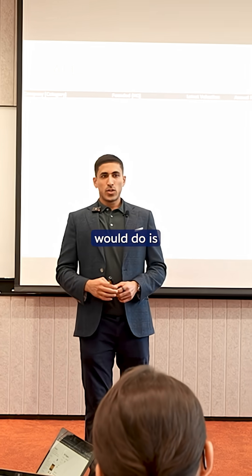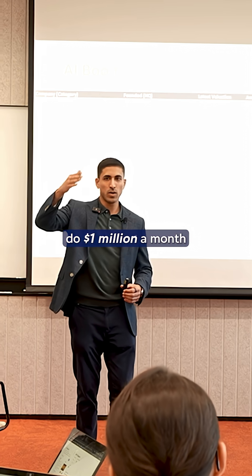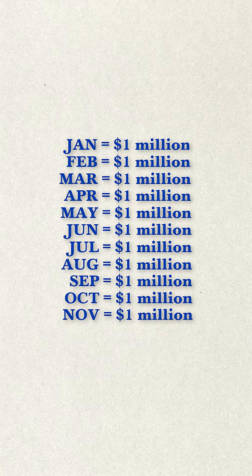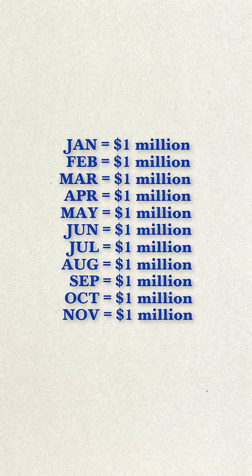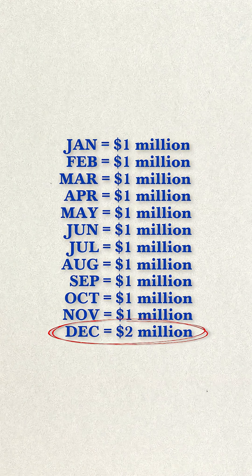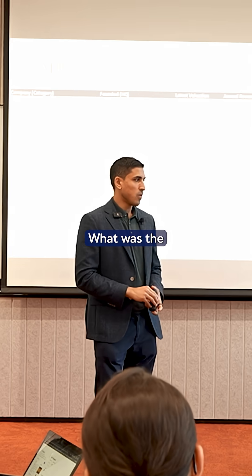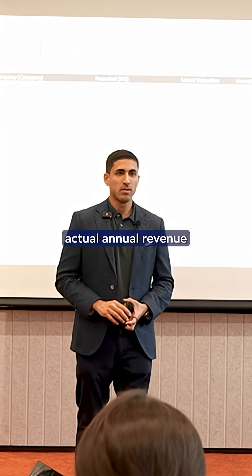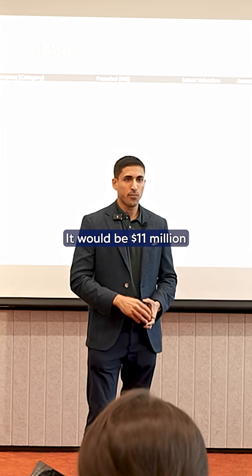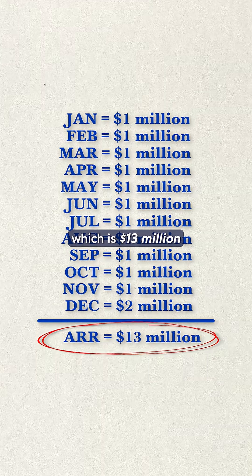But what a startup would do is, let's say they're able to do a million dollars a month. So they do a million in Jan, a million in Feb, and so on. When they get to December, they do 2 million in revenue. What was the actual annual revenue for that year? It would be 11 million plus 2 million, which is 13 million.